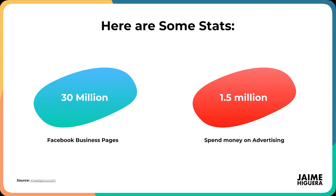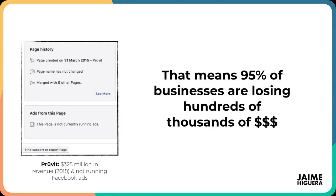It's a very slim number of people actually advertising. That means 95% of businesses are losing hundreds of thousands of dollars. Just to give you an example, Proveit — a pretty big company in the keto and clean nutrition space — isn't even running ads. In 2018, they made $325 million, primarily through MLM. That just goes to show that even big brands are not implementing Facebook advertising and online advertising in general.